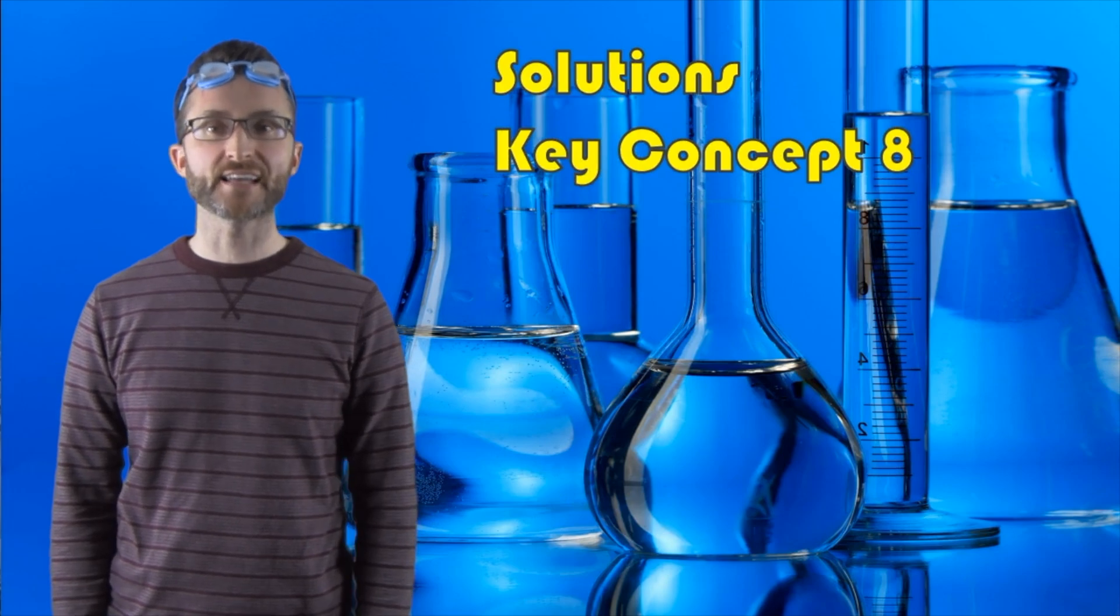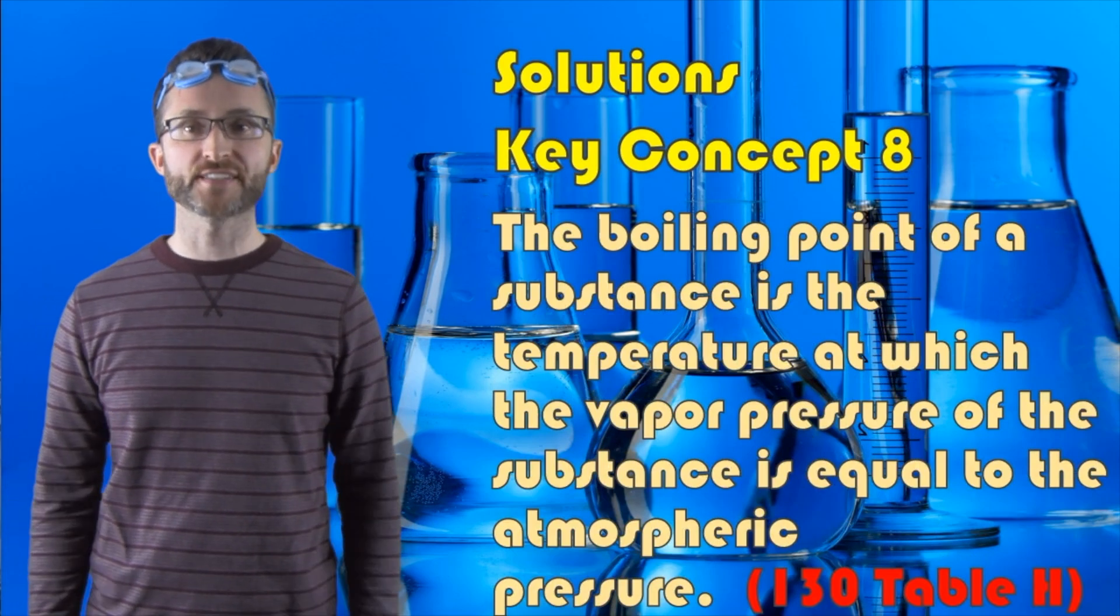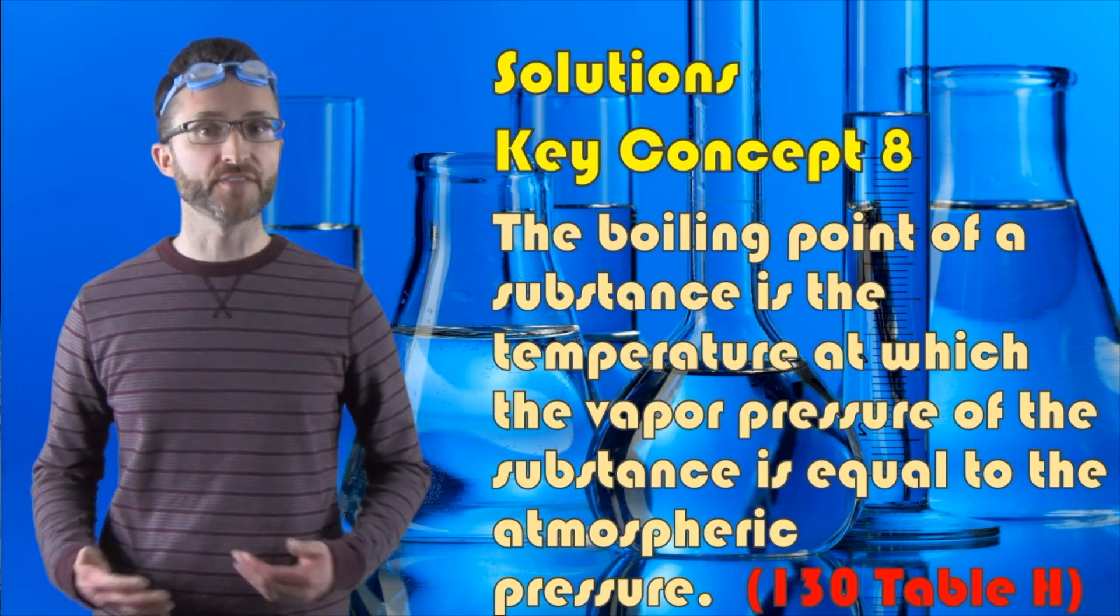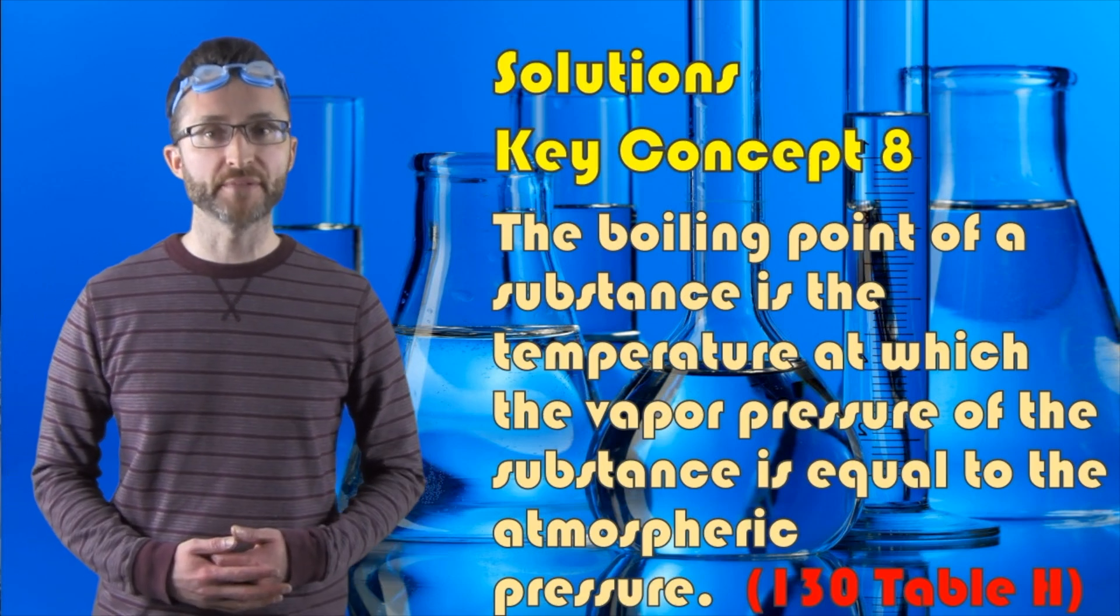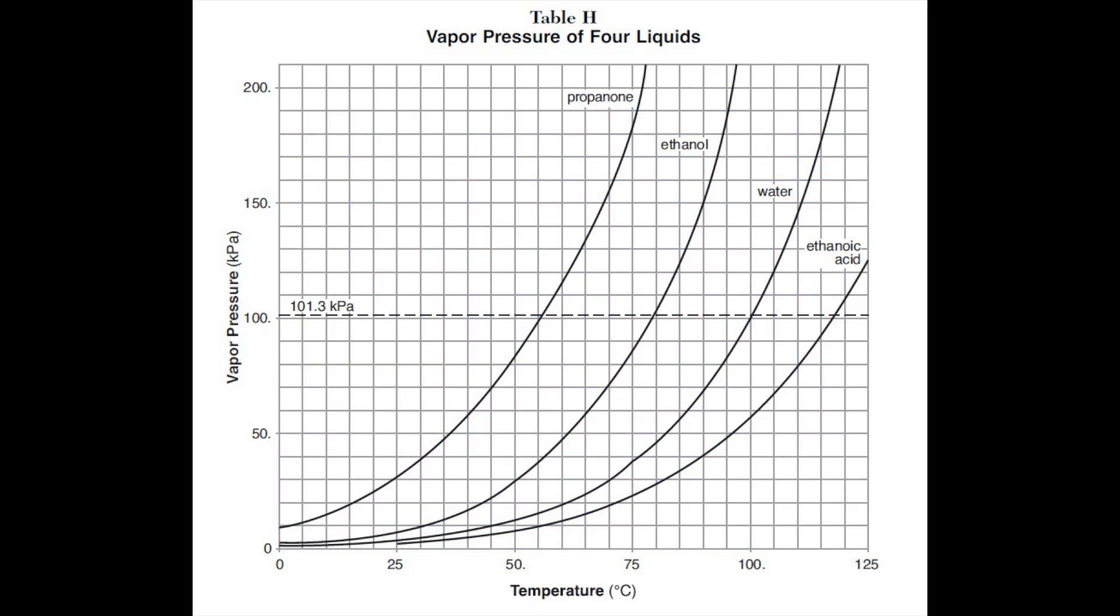Solutions, key concept eight. The boiling point of a substance is the temperature at which the vapor pressure of the substance is equal to the atmospheric pressure. We can take a look at table H, which is the vapor pressures of four different liquids. We have propanone, ethanol, water, and ethanoic acid.